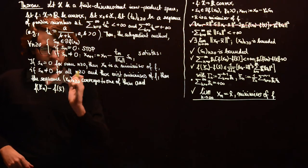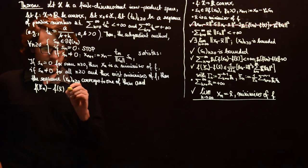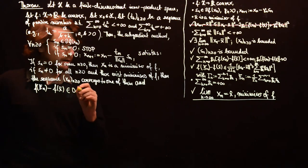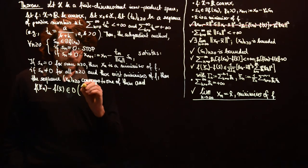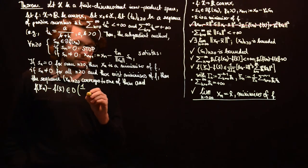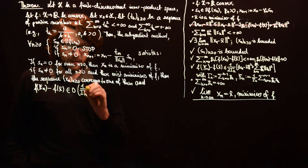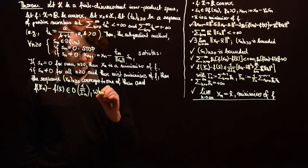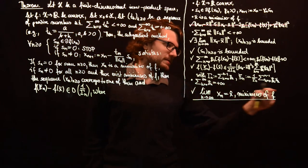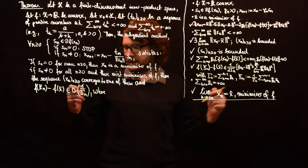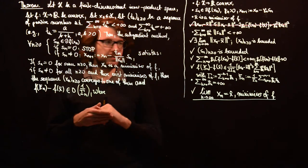So, this is capital O of 1 over gamma_n. And now we just have to write these things here. So, this is our ergodic convergence rate.